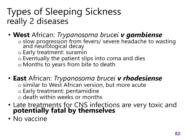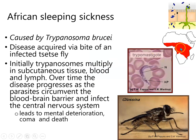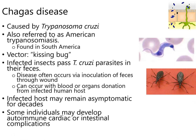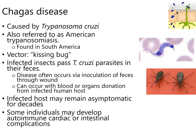Sleeping sickness occurs in sub-Saharan Africa in that belt. Chagas disease happens in South and Central America and to some extent the Southern U.S. What happens is these kissing bugs crawl on sleeping people — the most common scenario is that the bugs crawl on a sleeping person and bite them on the face, then defecate.